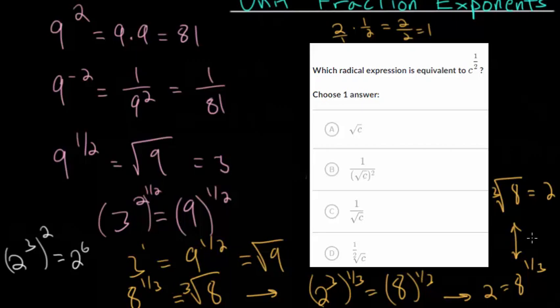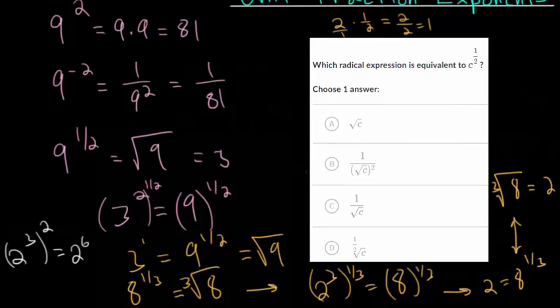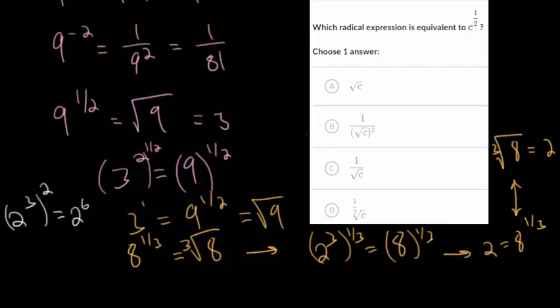So you can make this argument for any type of root you want to take. But basically, we can generalize this and say that any number we have to the 1 over n power is equal to the nth root of whatever that number is.